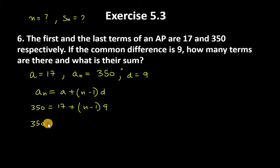350 equals 17 plus (N minus 1) times 9. So 350 minus 17 is 333 equals (N minus 1) times 9. Now take 9 to the left hand side, so 333 divided by 9.